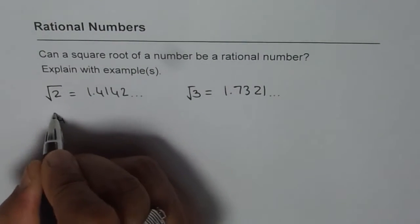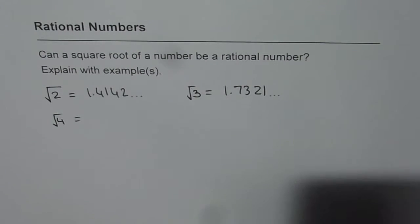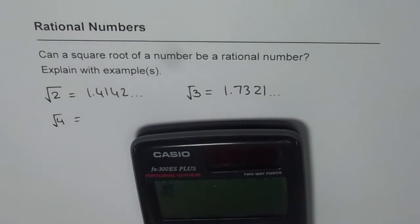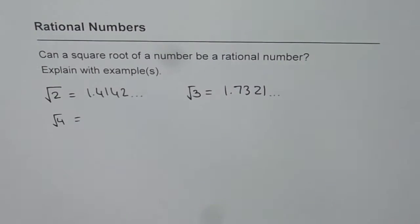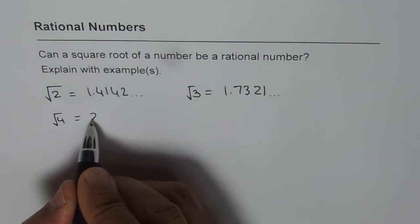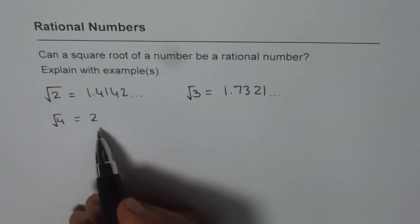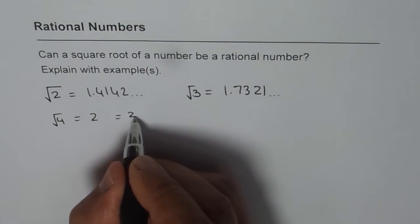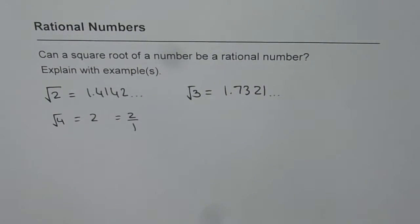How about square root of 4? Let us use our calculator and find square root of 4. It is equal to 2. Now square root of 4 is 2, which we know is a rational number. It could be written as 2 over 1.